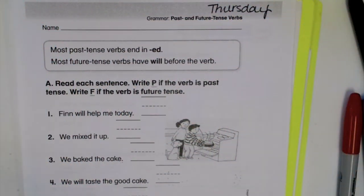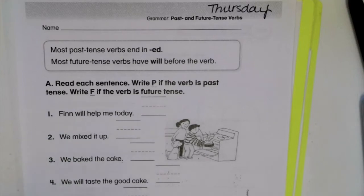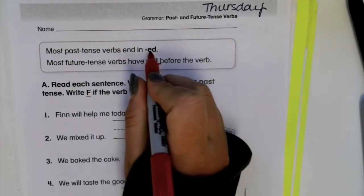First grade, today for grammar we are going to continue looking at past and future tense verbs. Remember that most of our past tense verbs are going to end in ed, something that already happened. Most future tense verbs will have the word will before the verb.